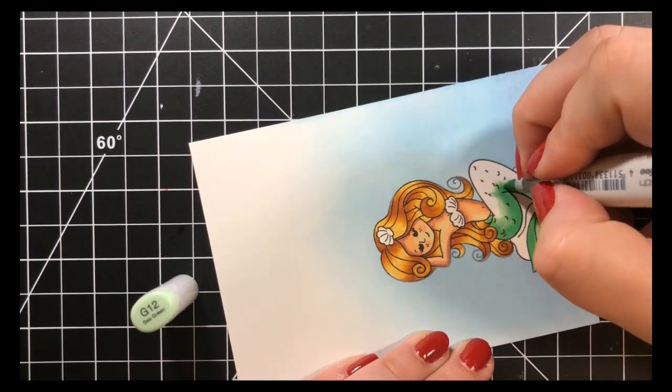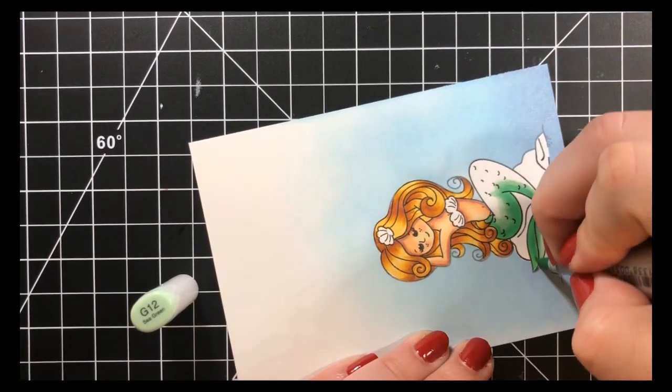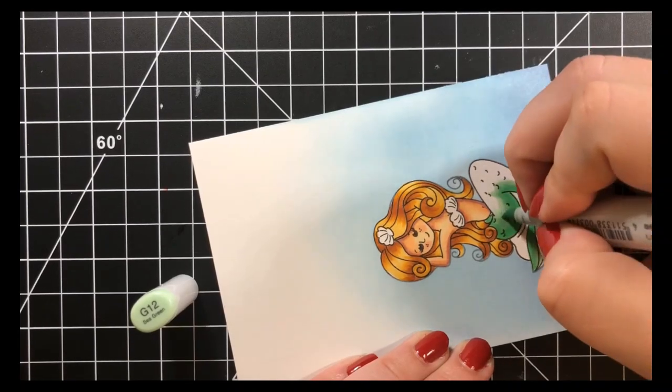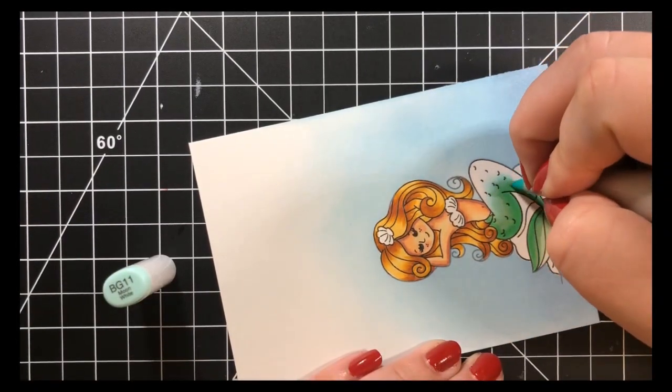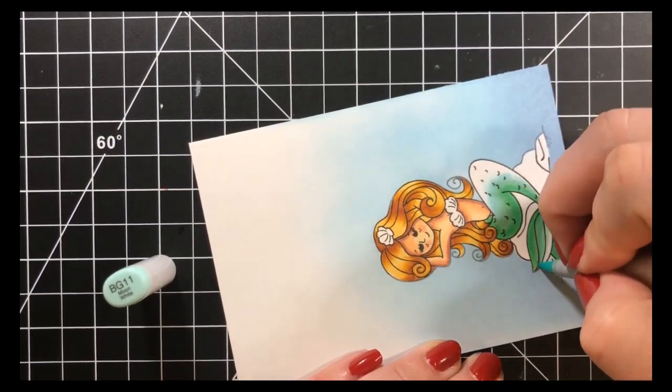Then, I'll blend that out with that G12. Again, here is where I will be using a little bit of the flicking. Next, I'll move on to my BG11 and extend that G12.